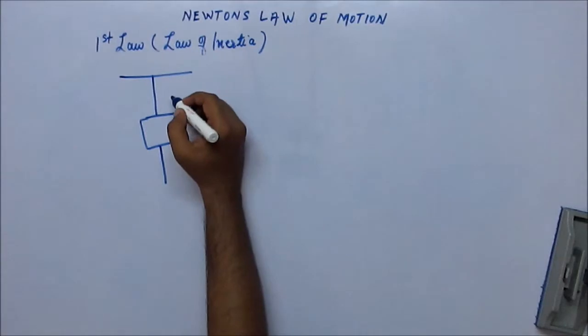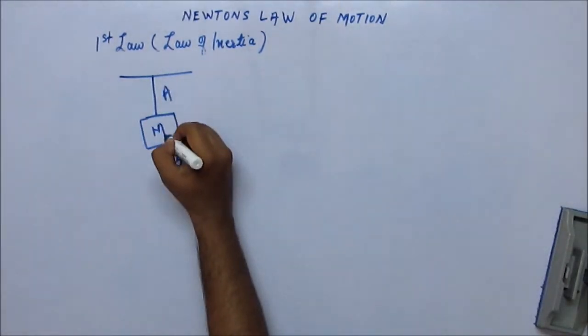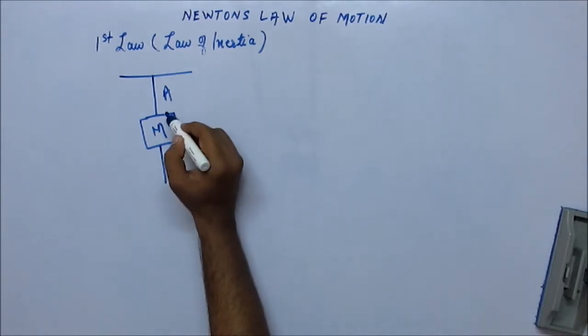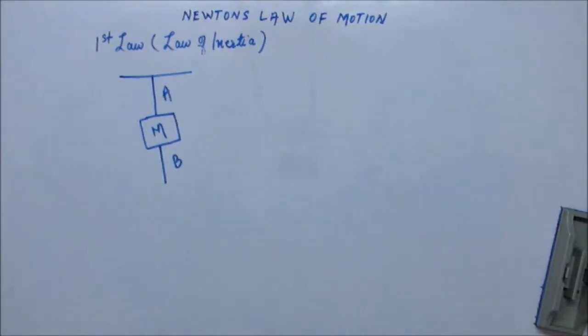There are two strings like this, string A, string B and there is a mass. Mass M is held only by string A and string B is attached to the mass.